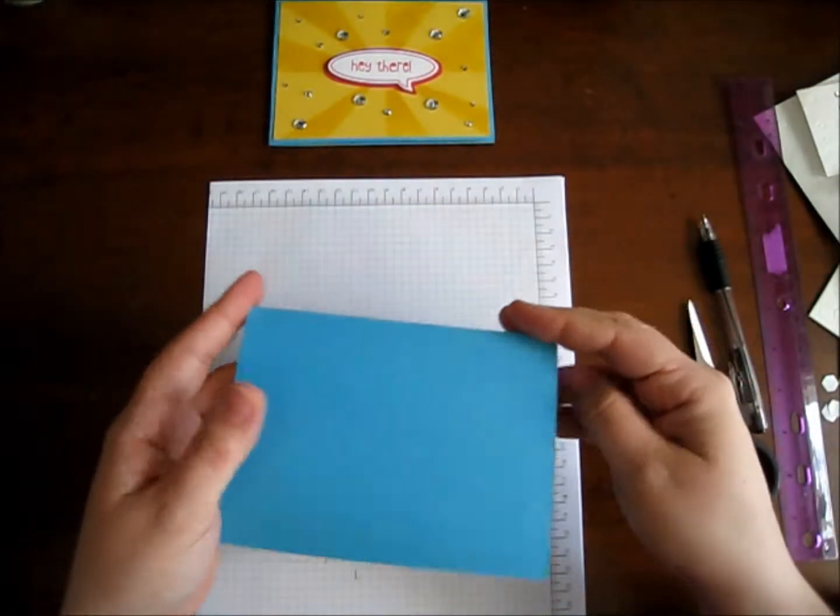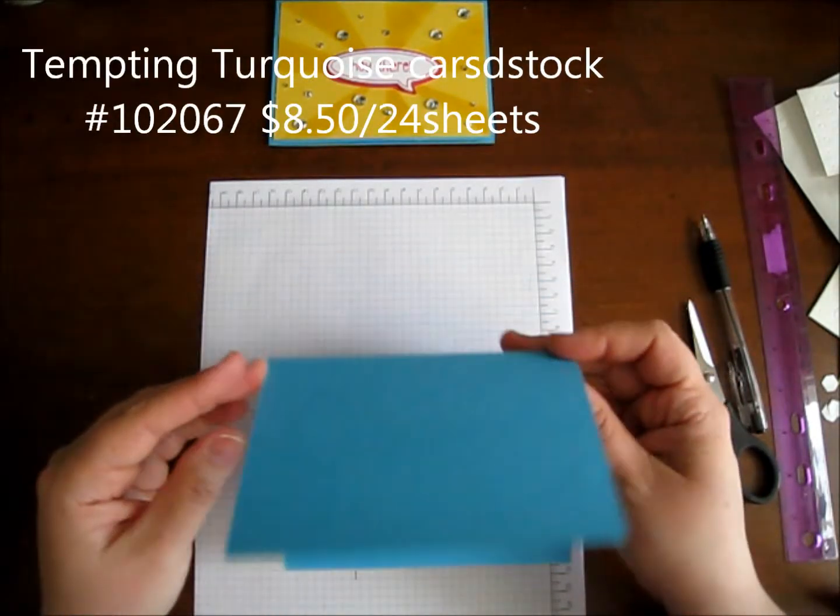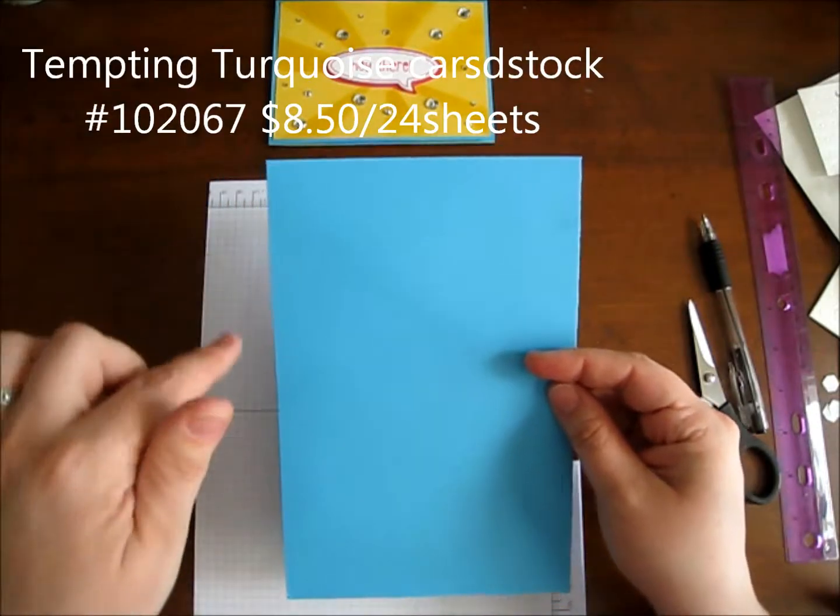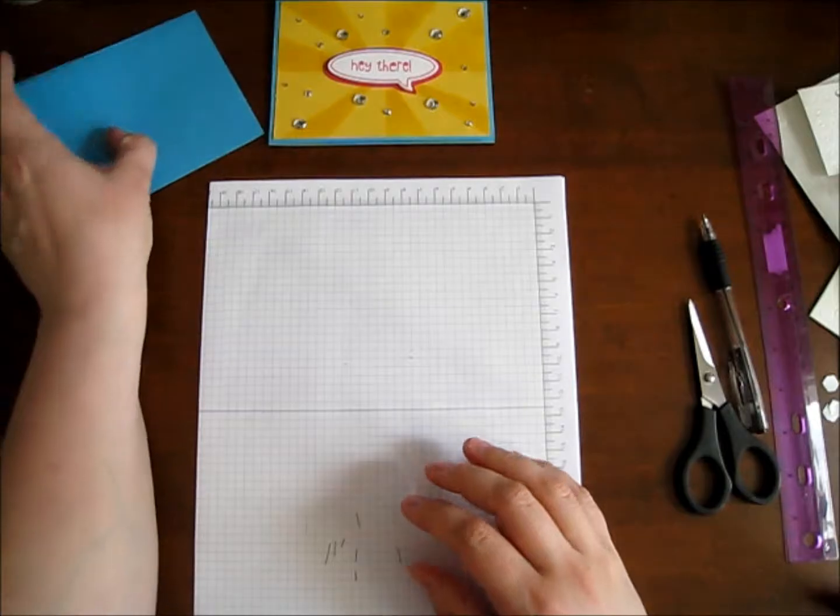So here's the card base, Tempting Turquoise, basic card size, five and a half by four and a quarter. So it's a sheet of eight and a half by eleven cut in half and you get two cards out of it. So there's your card base there.